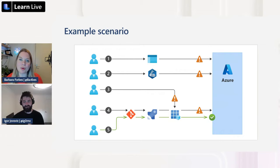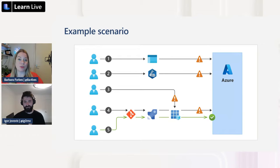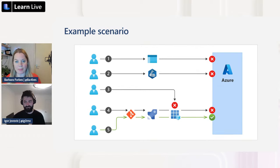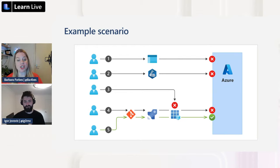Scenario one is common when you're a single administrator just starting out, or when a new team member is still used to working in the portal. We want to block all other scenarios so no accidents can happen. Scenario five is the goal: deployments through Azure DevOps or GitHub, via a pipeline with a service principal, reviewed and tested.